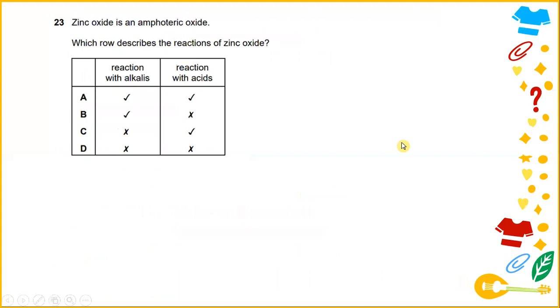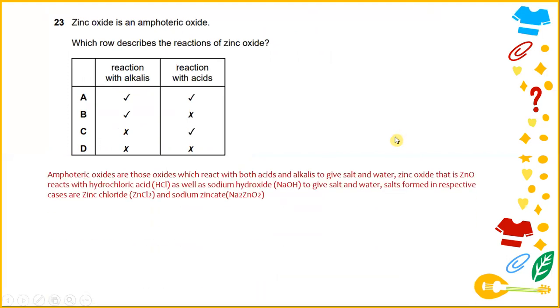Zinc oxide is an amphoteric oxide which also describes the reaction of zinc oxide. Amphoteric oxides are those oxides which react with both acid and alkali to give salt and water. Zinc oxide reacts with hydrochloric acid as well as sodium hydroxide to give salt and water. The answer will be A, reaction with alkali and reaction with acid.